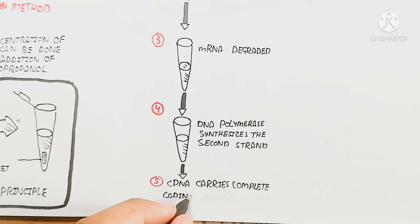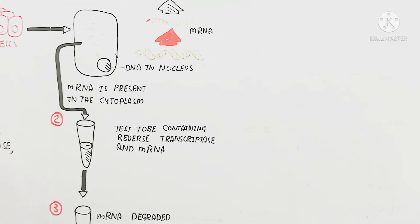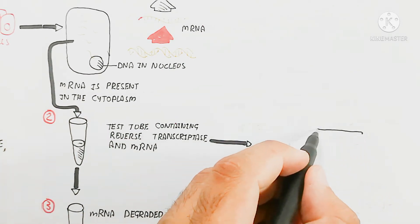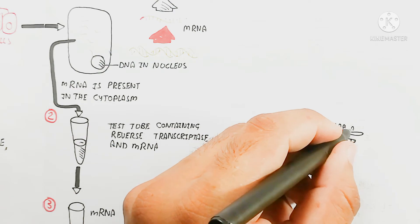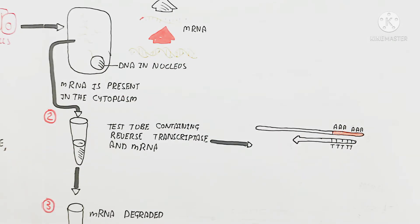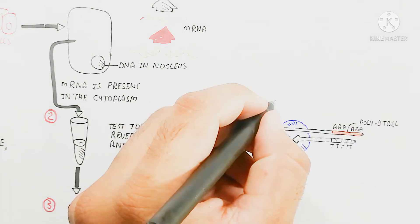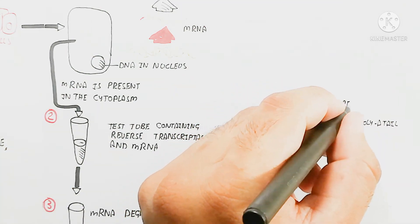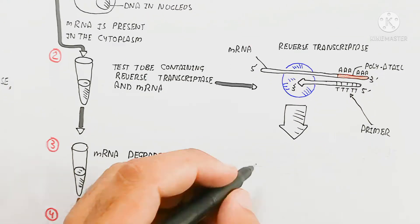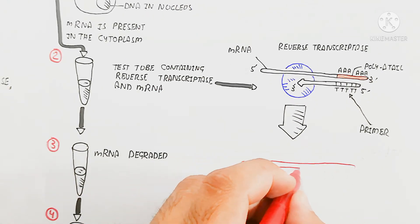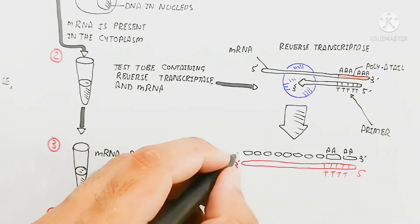Step three: the messenger RNA is degraded. Step four: DNA polymerase synthesizes the second strand, and the complementary DNA carries the complete coding sequence without introns. A poly-A tail is present on the mRNA, and a poly-T primer (TTT) binds at the five-prime end moving toward the three-prime end of the messenger RNA. The reverse transcriptase enzyme begins reverse transcription of messenger RNA into DNA.